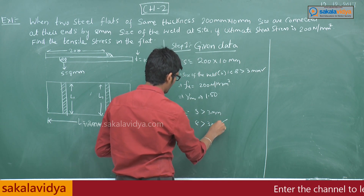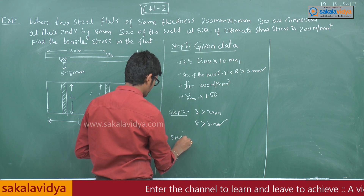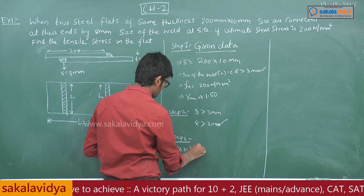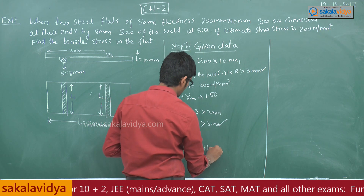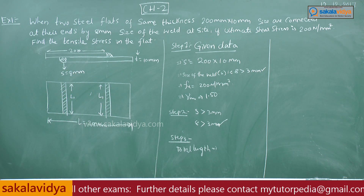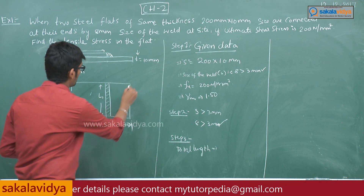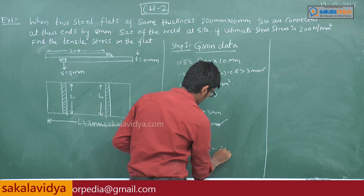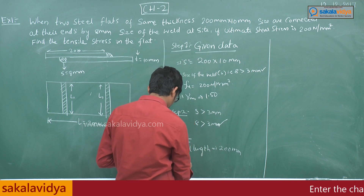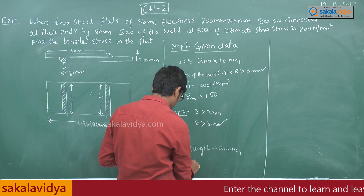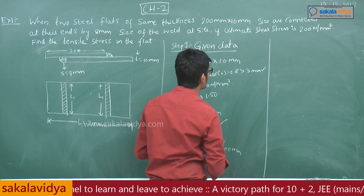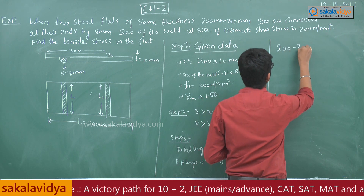Step 3: Total length of the weld. To find the effective length, we calculate 2 × 8 = 16, so the effective length is 200 minus 16, which equals 184mm.